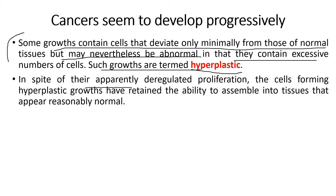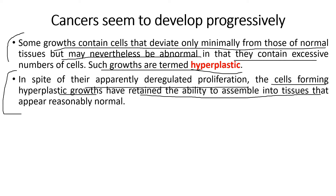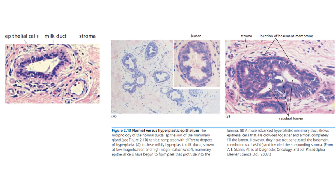In spite of their apparently deregulated proliferation, the cells forming hyperplastic growths have retained the ability to assemble into tissues that appear reasonably normal. These contain areas which are abnormal from normal cells, due to which they proliferate indefinitely, and that is why they are termed as cancer cells.